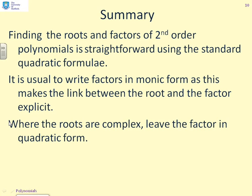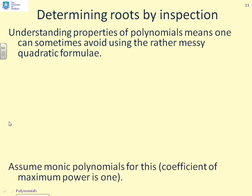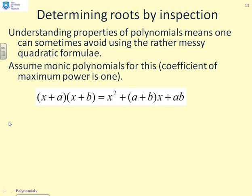Before we finish, just a bit of an aside. Quadratic formula can be a bit messy and sometimes unnecessarily cumbersome. You can occasionally get the solution much more quickly by using inspection. So, let's give an example. First of all, I'm going to assume that the polynomial is monic. So, always make it monic before you start. It just makes life a bit easier. So, here's an example for you to see. I've got x plus a times x plus b. And if I multiply this out, I get x squared plus a plus b times x plus a b.